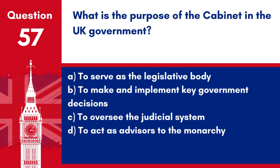Question 57. What is the purpose of the Cabinet in the UK Government? A. To serve as the legislative body. B. To make and implement key government decisions. C. To oversee the judicial system. D. To act as advisors to the monarchy. Answer: B. To make and implement key government decisions. The Cabinet in the UK Government is responsible for making and implementing key government decisions.